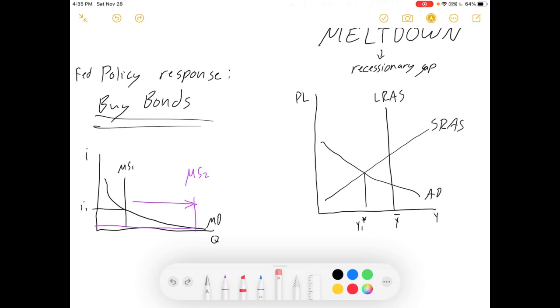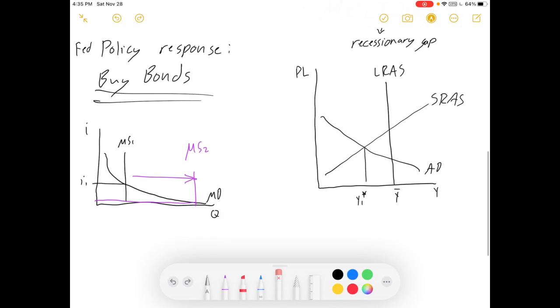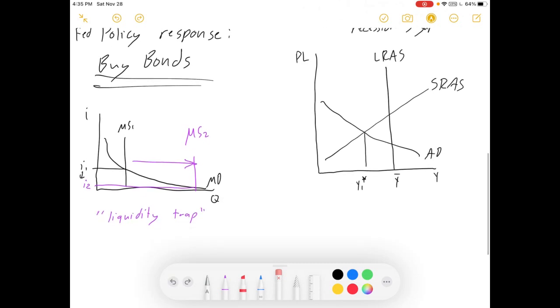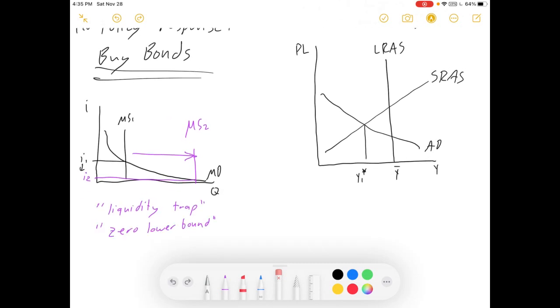Now when it does, it can end up at or near zero. If the interest rate started high, increasing the money supply can lower it a lot. If the interest rate starts low, you can increase the money supply a lot and the interest rate won't actually go down that far. This is what we call the liquidity trap. We also call it a zero lower bound.